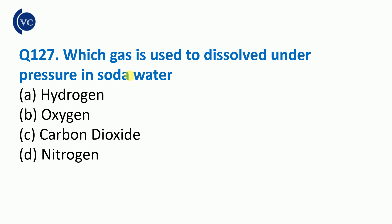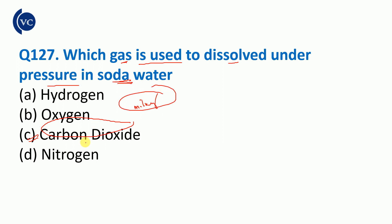Next question: which gas is used to dissolve under pressure in soda water? Soda water is dissolved with carbon dioxide gas. So carbon dioxide is used to dissolve under pressure in soda water.